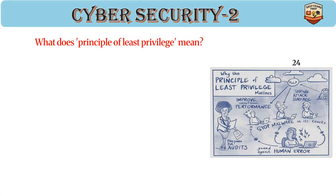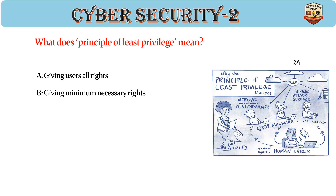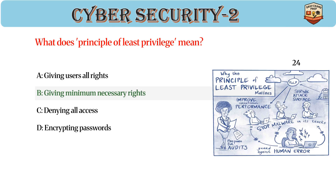What does the principle of least privilege mean? Answer: B. Giving minimum necessary rights. Users get only the permissions they need. Reduces risk of misuse and attacks. Common in role-based access control.